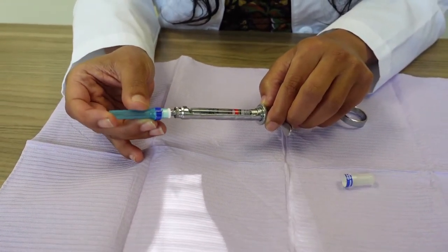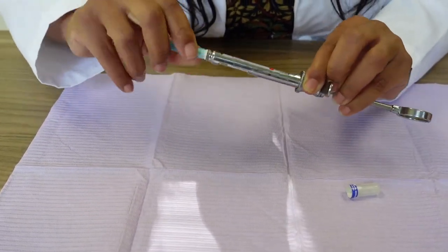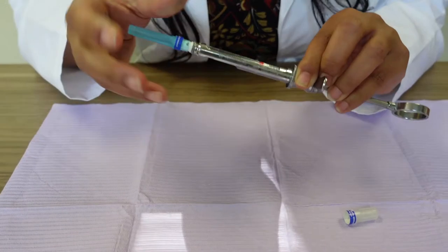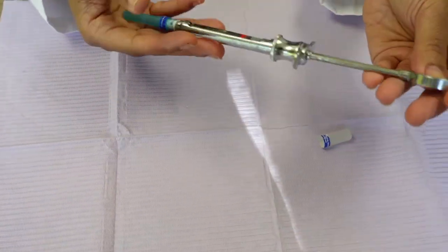You're going to push it in all the way, tighten it up. Make sure it's tight. There we go! That's how you set up an aspirating syringe. And when you hand it to the doctor, this is how you hand it to the doctor.